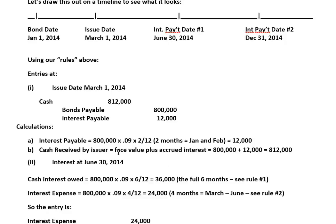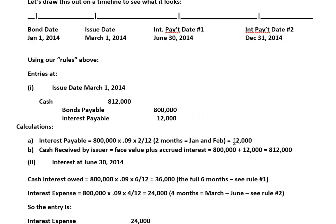The interest payable of $12,000 represents the interest that the investors are paying Barnes up front for the two months of January and February — from January 1st to March 1st. On $800,000 at 9% a year, prorated for only two months, that interest payable is $12,000. The cash received by Barnes, who's the issuer, is the face value plus the interest payable — that's $812,000. So the investors have given Barnes $800,000 face value plus the two months' interest up front of $12,000. Barnes records a bond liability of $800,000 and an interest liability of $12,000.